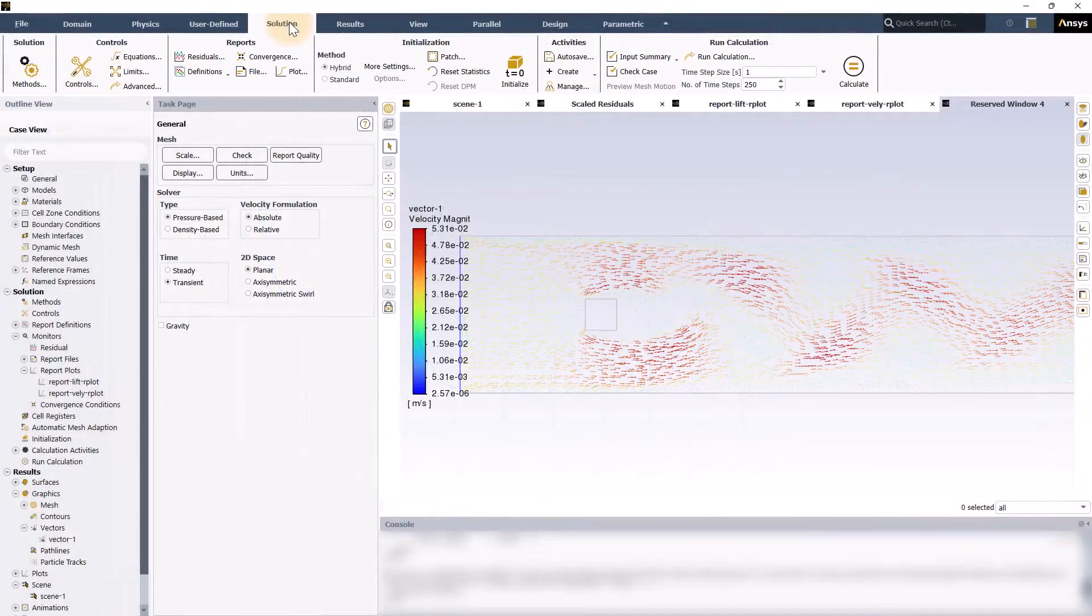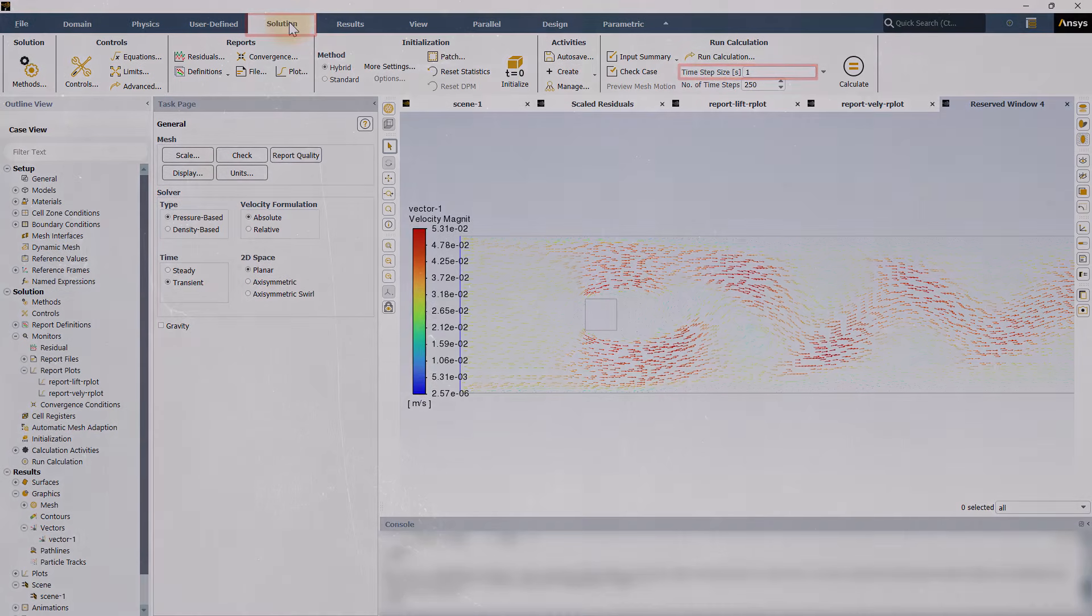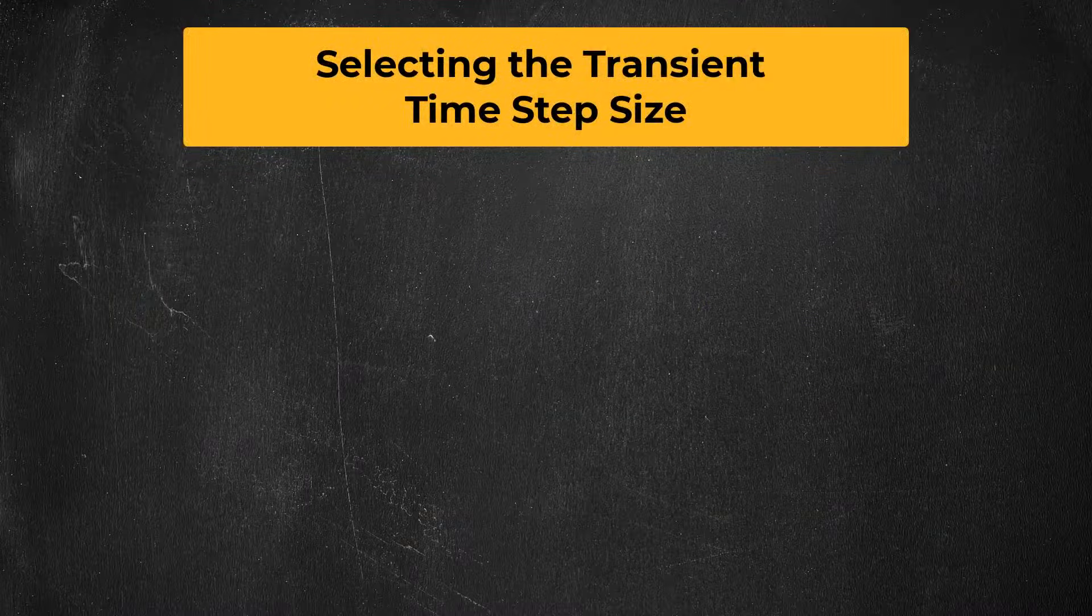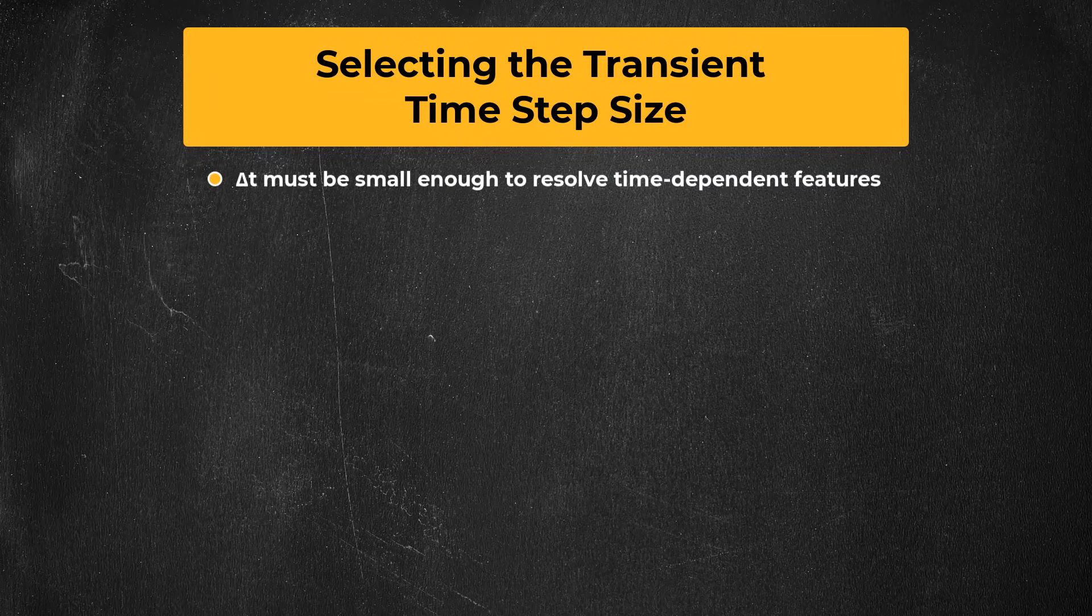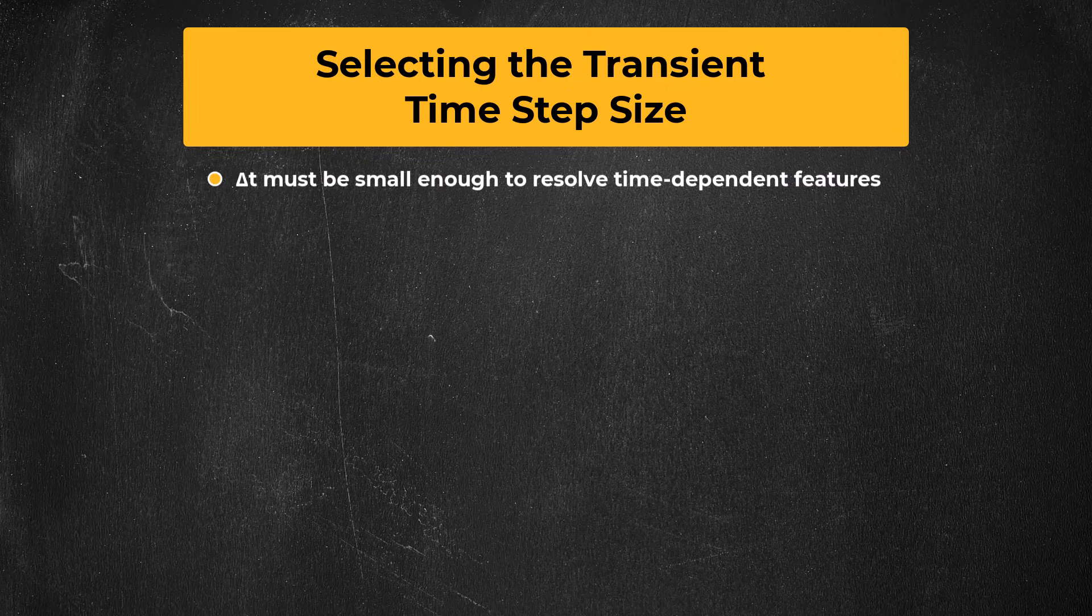One of the key inputs for a transient flow calculation is the time step size, and you will enter that in the solution tab. There are two criteria that determine what time step size you should use. The first is that the time step size, also called delta t, must be small enough to resolve time-dependent behavior in the flow.